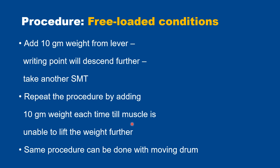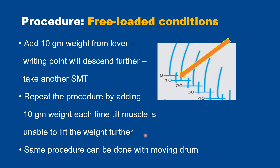In free-loaded condition, at rest you record one simple muscle twitch, then add 10 gram weight. When you add weight, the muscle stretches and the length of the muscle increases, causing a downward shift of the baseline because the muscle lever moves downward due to the hanging weight. Every time you add weight, the baseline shifts downward. This downward shift of the curve is the identifier of the free-loaded condition — you can be asked in your exam which condition this is.